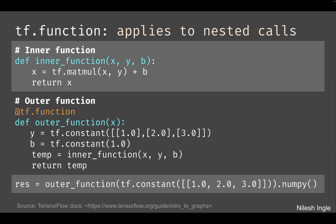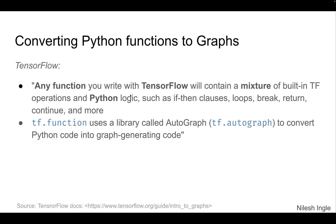Here we have a case where tf.function works on nested functions. We have an outer function called outer_function that calls inner_function defined above. There is a TensorFlow decorator — @tf.function — which converts both the outer function and the functions inside it into a graph. So when we call outer_function, we are working on a graph that includes both the outer and inner functions.